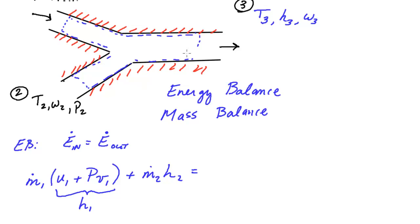And we have the same thing for state two. And what's going out? Well, we have the mass flow rate of air at state three multiplied by the average enthalpy at state three.